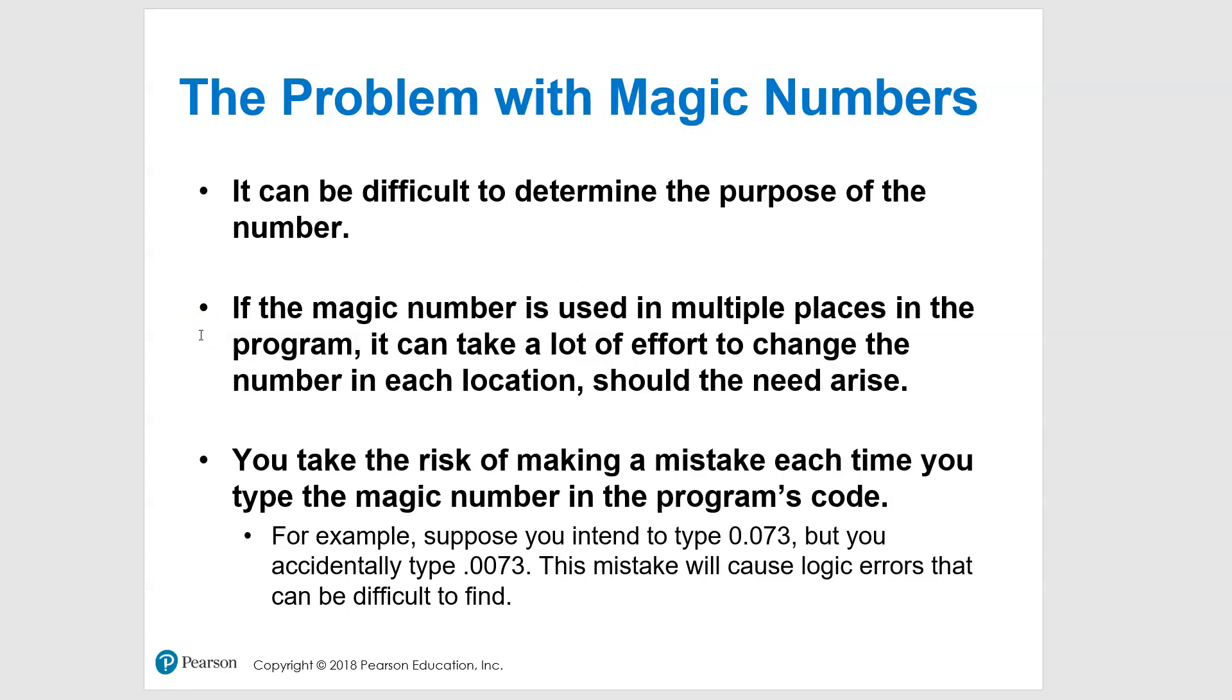That's a major issue. As you're typing it in each time, maybe you meant to type 0.073 but instead you type 0.0073. That is going to cause a logic error that can be difficult to find. You may never find it and just get incorrect data, and you may not know that until someone says, 'Hey, wait a second, this doesn't look right.'